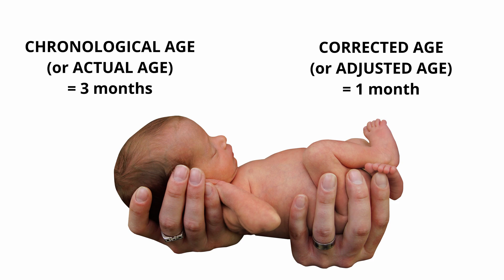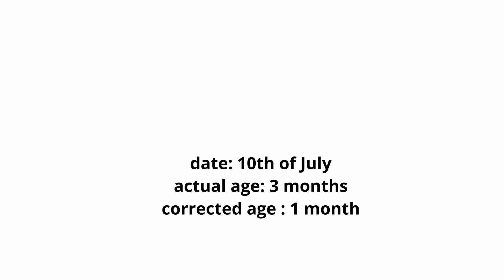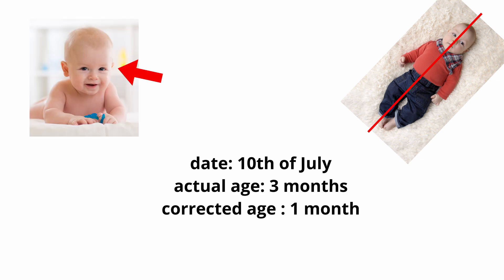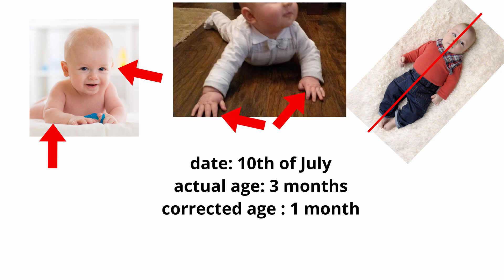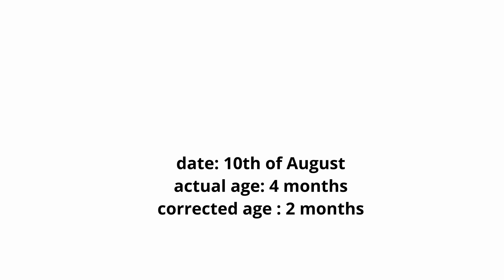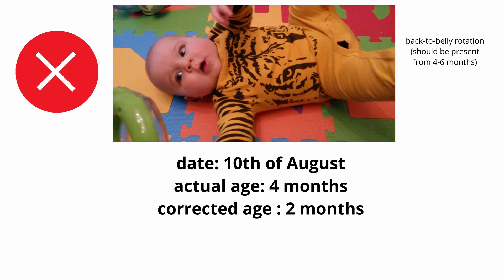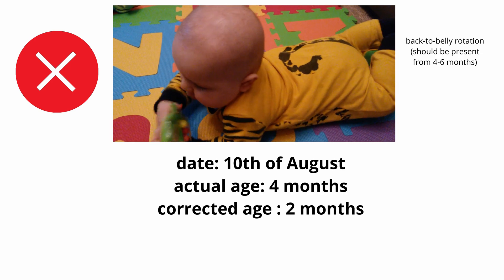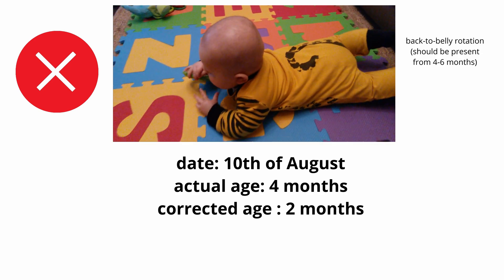So we cannot expect him to do what a 3-month-old baby does. Thus, we evaluate his abilities for the age of 1 month, not for 3 months. In this particular example, on the 10th of July, I will not expect this baby to hold head in midline of the body in supine position, to lift his head well in the prone position, to go to the forearm support in the prone position, to maintain the hands open, etc., as these are the skills of a 3-month-old baby, not a 1-month-old one. If I evaluate the same child at 4 months of chronological age, I will not expect back-to-belly rotation skills from him or her. This ability usually appears between 4–6 months, so for this particular child, this ability may not develop until the age of 6–8 months of chronological age.